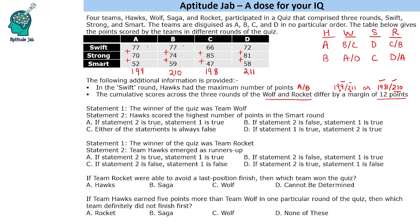If Statement 2 is true, that means Hawks scored highest in the Smart round, which means Hawks is Team B. But if Hawks is B, Wolf can be A or D, so we cannot say Statement 1 is definitely true — it may be true or false. If Statement 2 is false, that means Statement 1 is also definitely false, because Team Wolf cannot be the winner in that case.